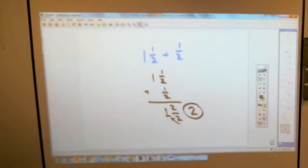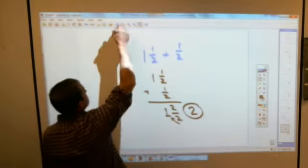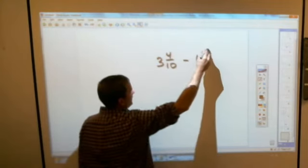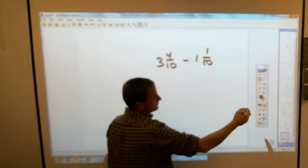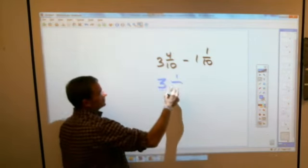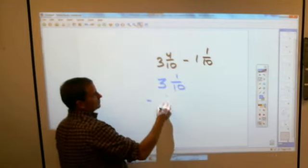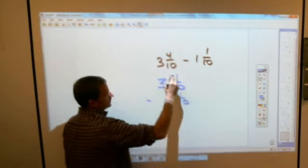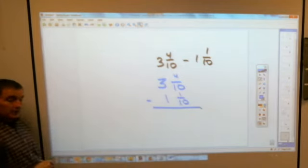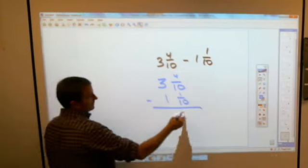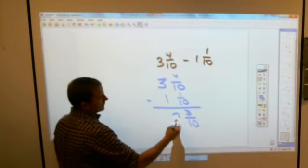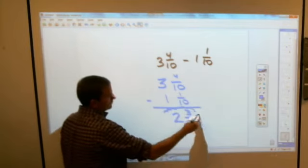How about a subtraction one? Three and four tenths. Three and four tenths. Minus one and one tenth. Step number one, always write up and down. Minus one and one tenth. I'm sorry, this was four tenths, wasn't it? What do you get if you subtract one tenth from four tenths, Victoria? Three tenths. Three tenths. And if you take one away from three, you end up with a big two. Or a little two. Or whatever.